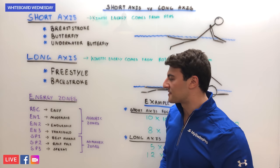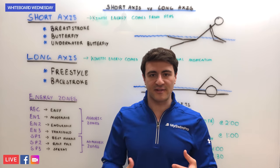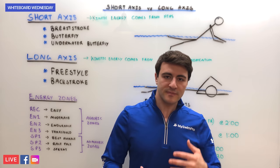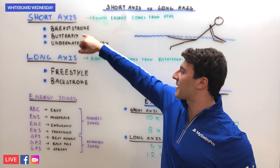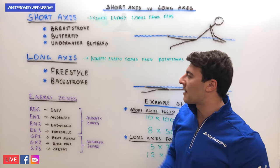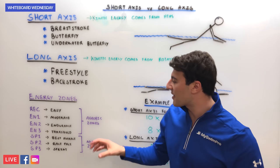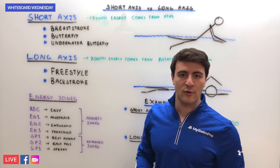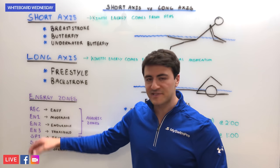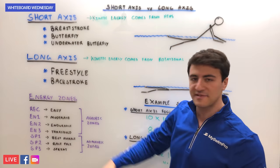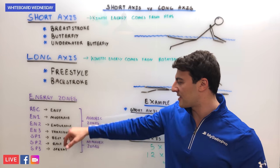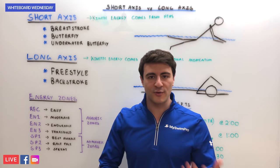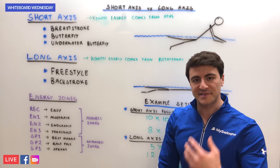Going back to the different energy zones — and we have a Whiteboard Wednesday session just on energy zones — you have your aerobic zones and your anaerobic zones. Quick recap: there are seven zones starting from Recovery (easy swimming), EN1 (moderate), EN2 (endurance), EN3 (threshold), SP1 (best average), SP2 (race pace), and SP3 (sprint).